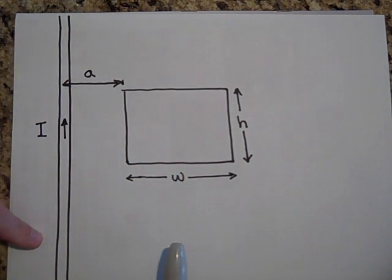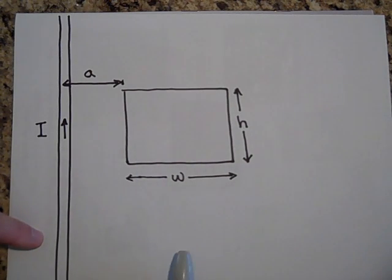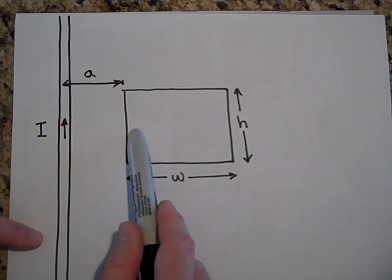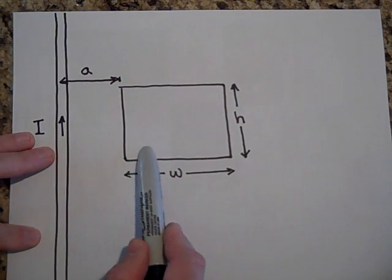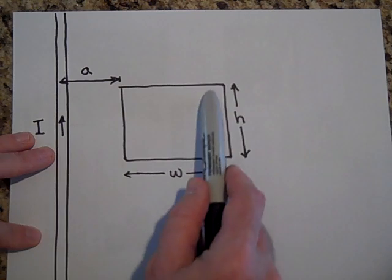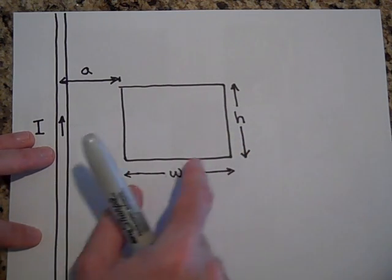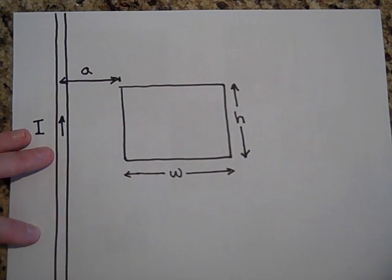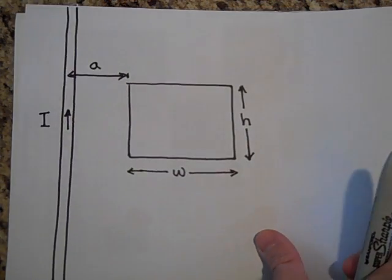The reason I say that's a non-uniform magnetic field is because as you go out, the field gets less and less. So there's a lot of flux in this part of the hoop, but as you go out this way, it's less and less flux. In fact, if we move this hoop to infinity, there'd be no flux through it. So let me show you how you do this.